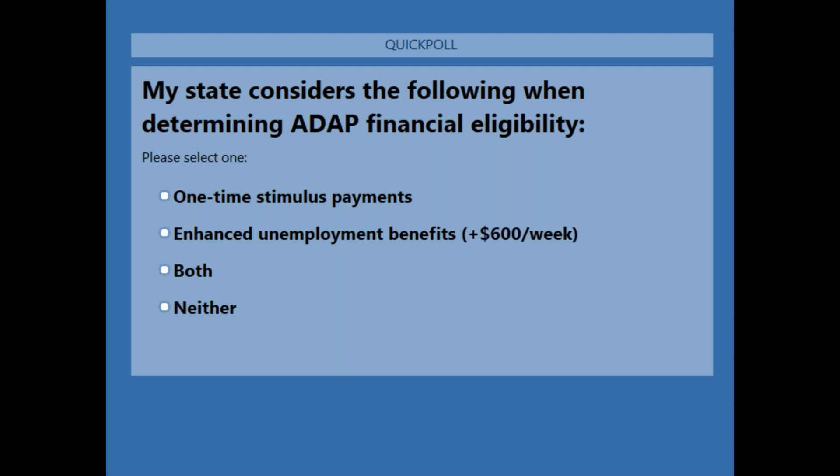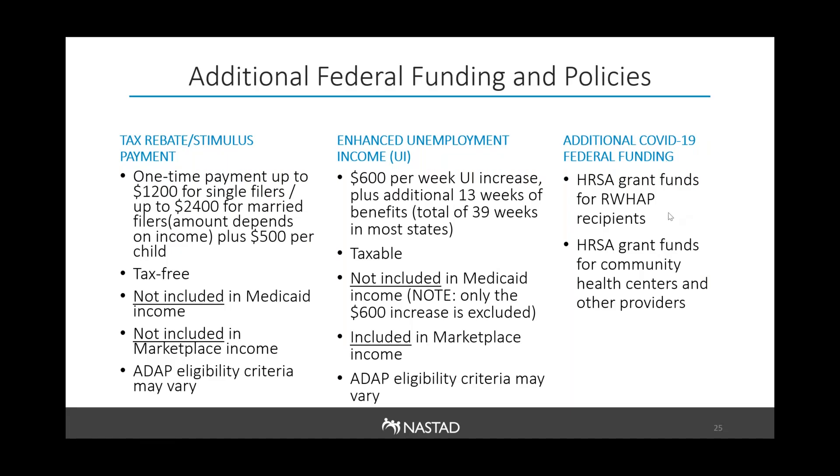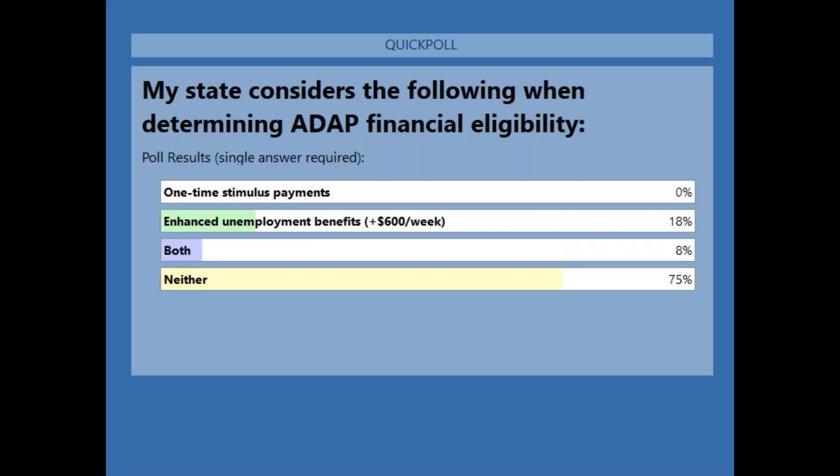We have a good number of poll responses. The overwhelming majority of folks are responding that their state is not going to consider either type of income in ADAP eligibility — about 75 percent. Almost 20 percent will be considering the enhanced unemployment benefits, and a small number of states said both.